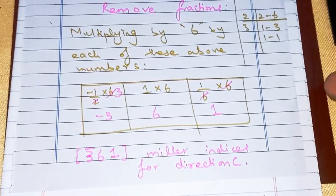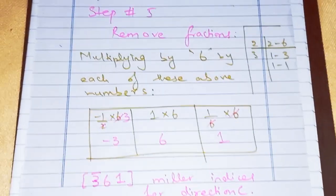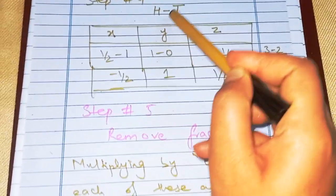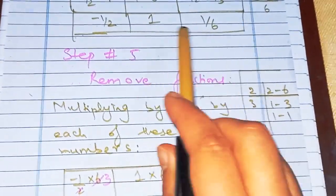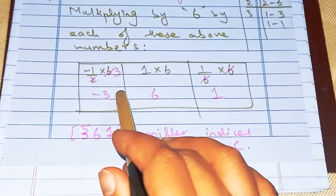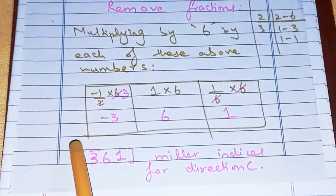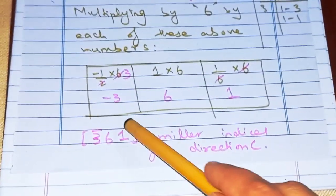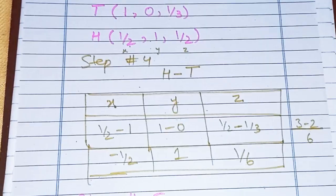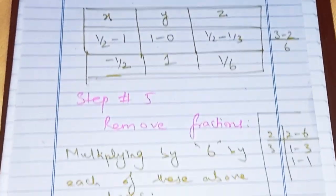The key challenge in finding Miller indices is accurately determining the head and tail coordinates from the figure. After that, subtract tail from head, remove any fractions, and confirm the results are in least integer form — those are your final Miller indices. We'll be doing the same process for direction D in the next video, so stay tuned. Goodbye!